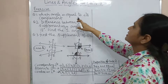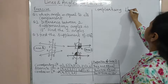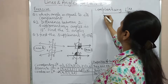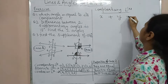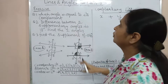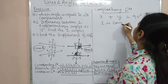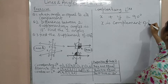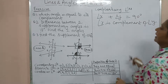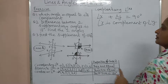The first question: which angle is equal to its complement? Complementary angles — if you remember, there are two angles X and Y, and if their sum is 90 degrees, they are called complementary angles. So the question asks: which angle is equal to its own complement?